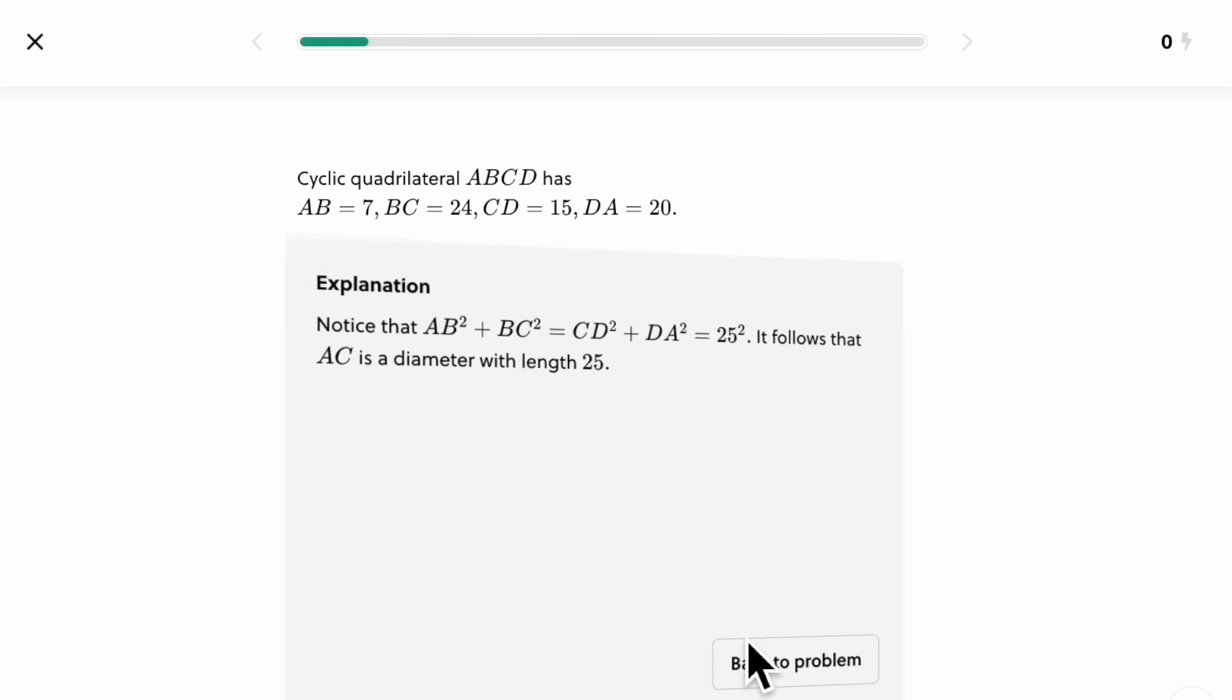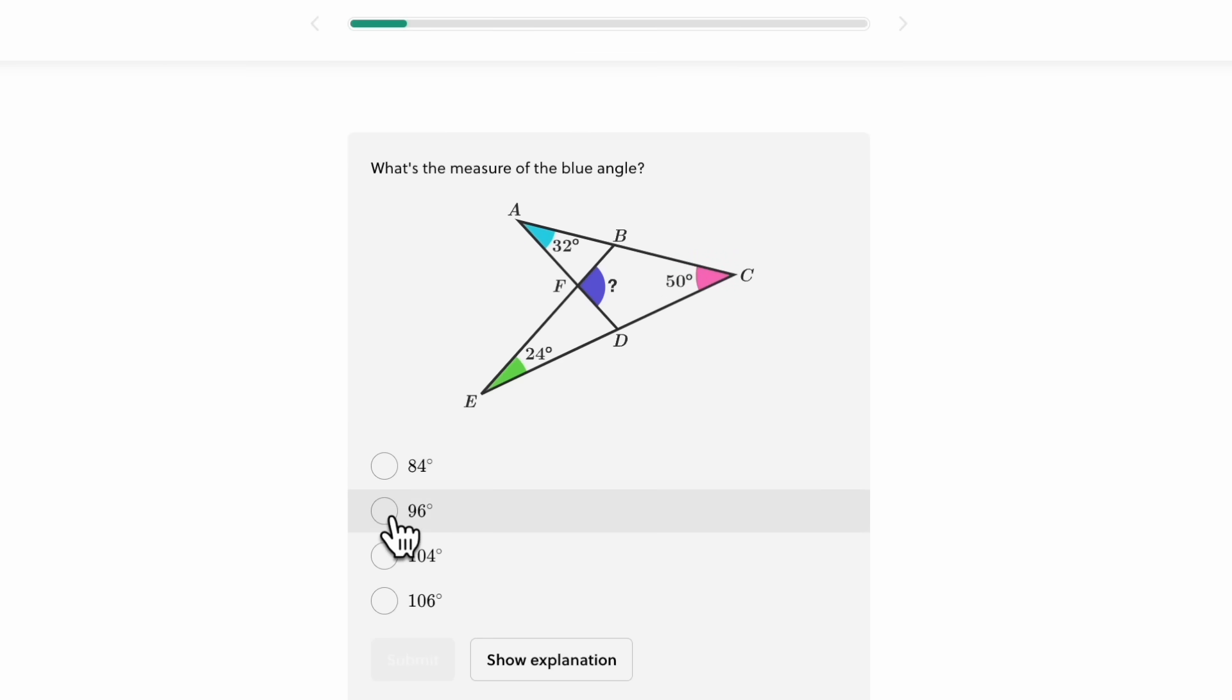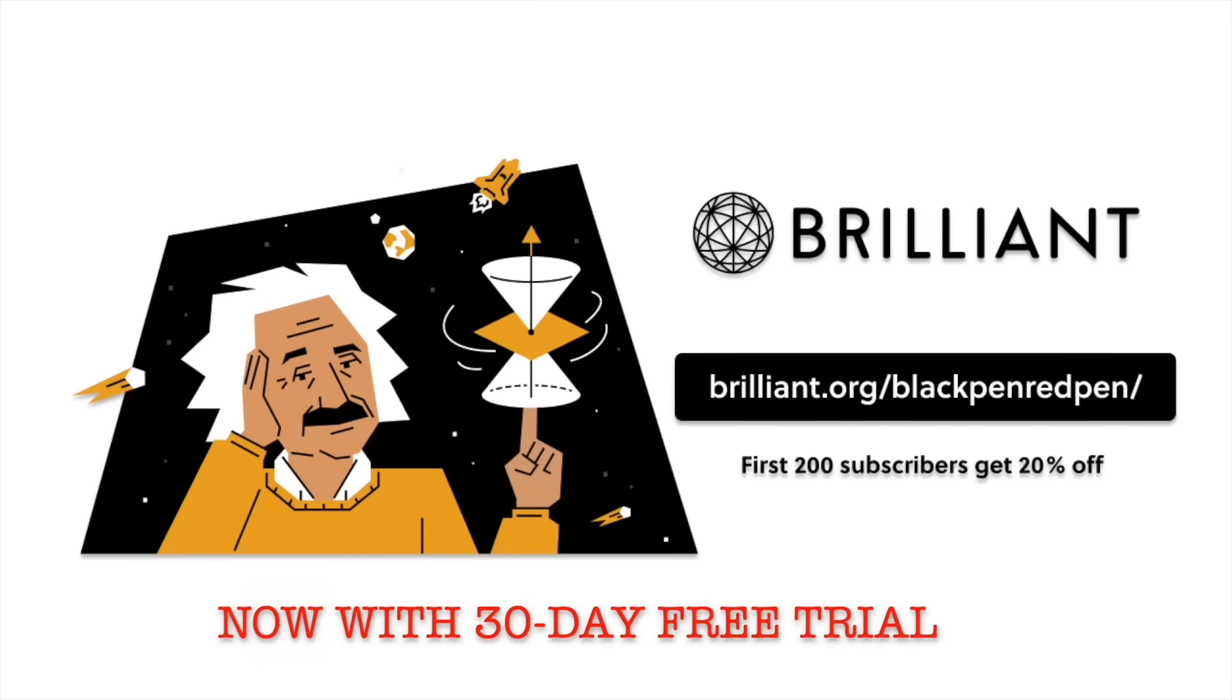I started to like math when I was in high school, and I really wish that I could have Brilliant back then. But now you have the chance to get started with Brilliant for 30 days free. And if you use the link in the description, brilliant.org/blackpenredpen, you can get a 20% discount. I want to thank Brilliant for sponsoring this video. I also want to thank you guys for checking them out.